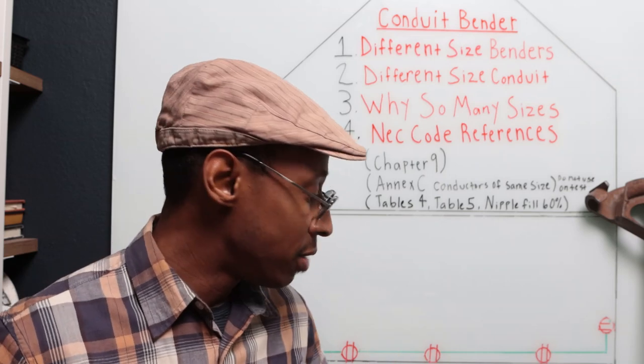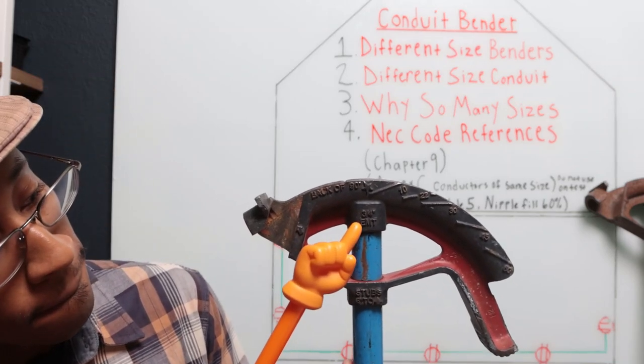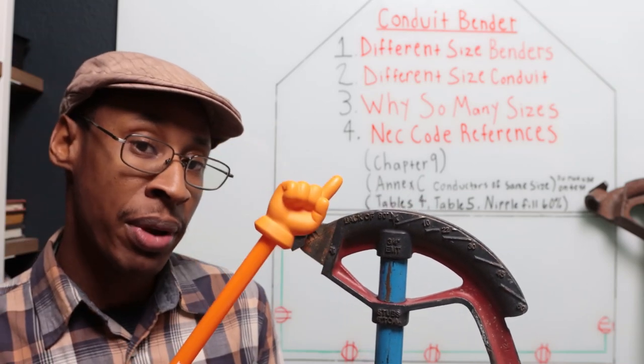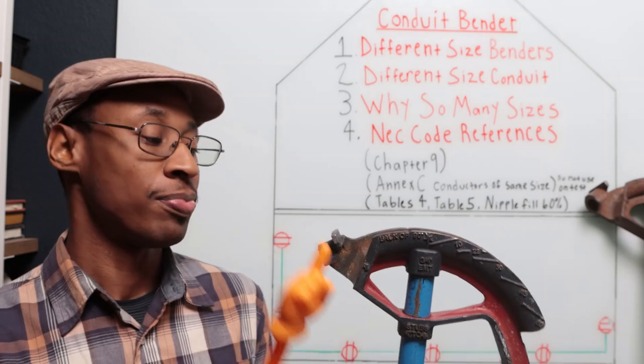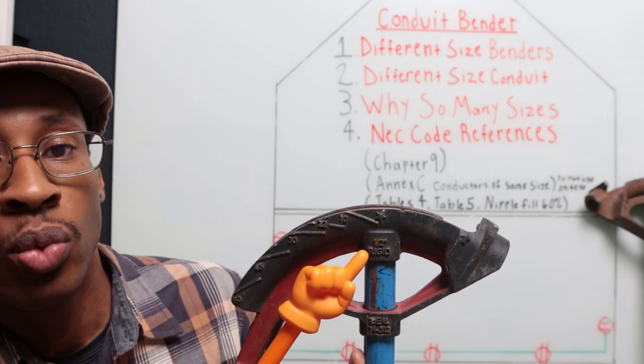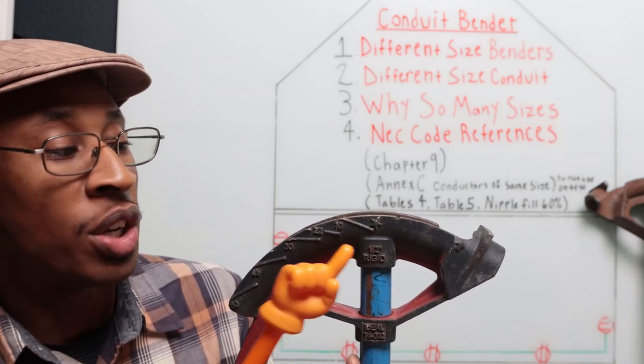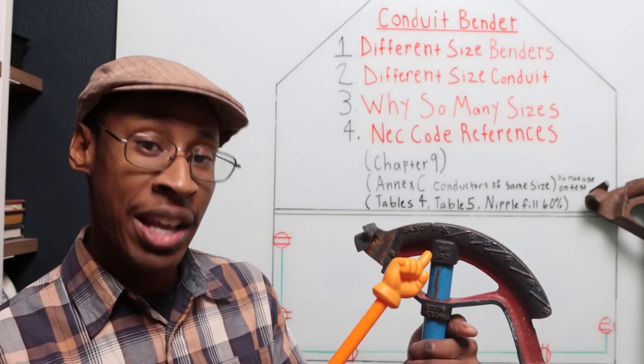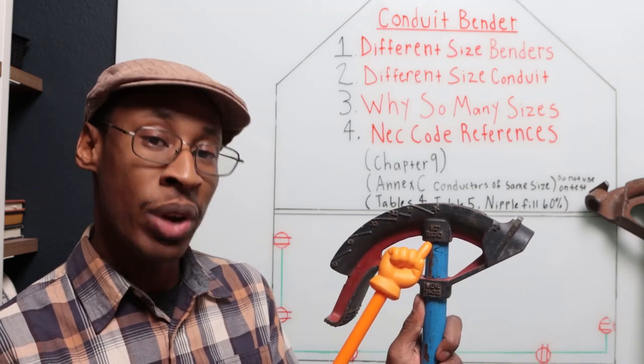Next size bender, three quarter, three quarter EMT. Now on the back of this bender, it's going to go back down to half inch, but half inch rigid, not EMT, half inch rigid. So with this bender, you could bend three quarter EMT, and also you can bend half inch rigid conduit.